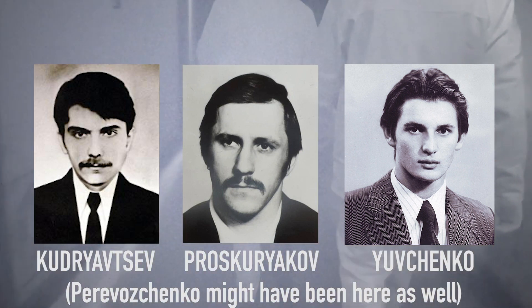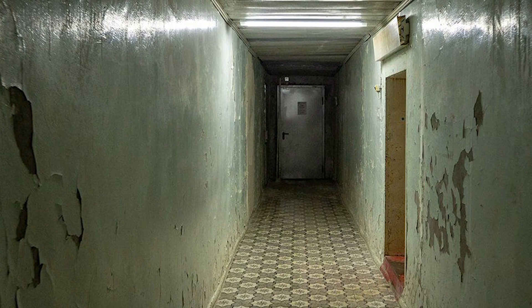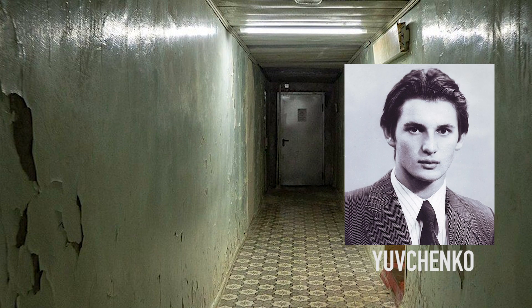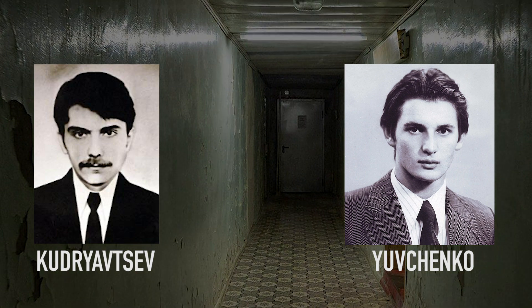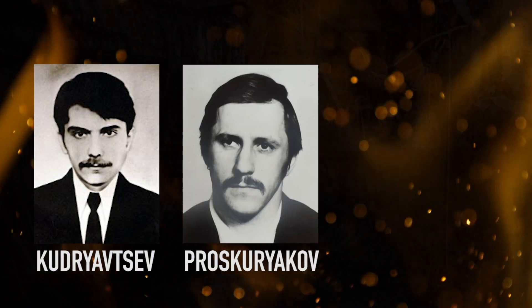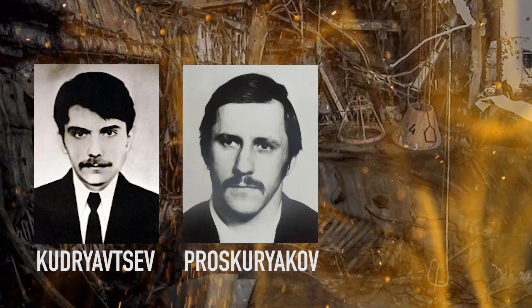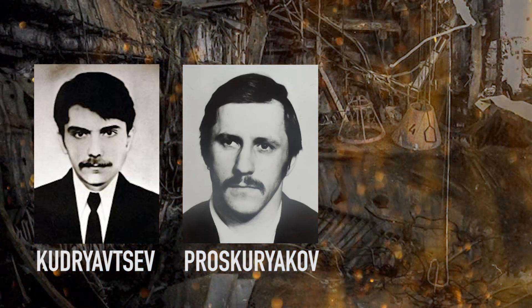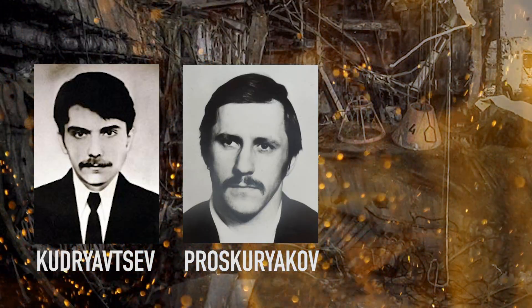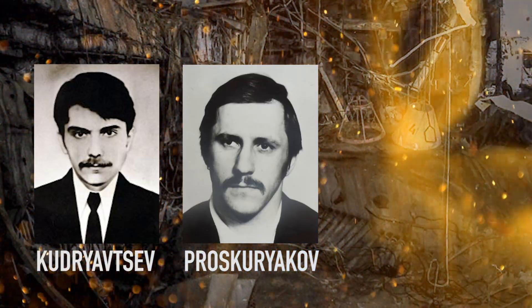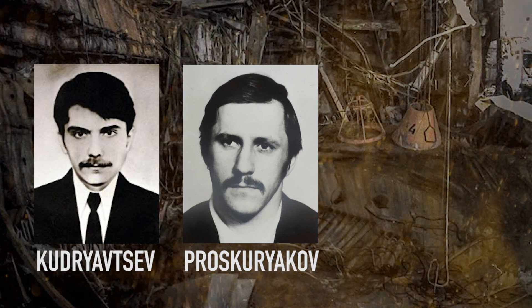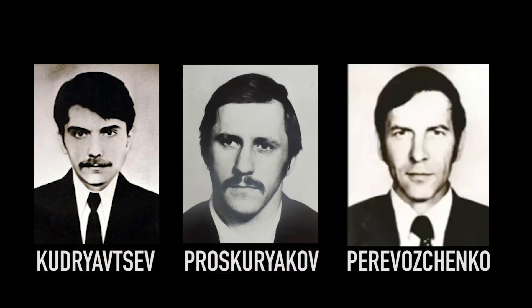The entrance to the reactor room is blocked by a heavy steel door. Yuvchenko forces it open and holds it ajar while Kudryavtsev and Proskuryakov enter to check on the control rods. Confronted with the open flames of the exposed reactor, the skin on their faces quickly darkens, resembling a sunburn. Kudryavtsev and Proskuryakov are only inside the reactor room for a minute, but within that time, both receive a fatal dose of radiation. Along with Perevozchenko, these three men will be the first to succumb to the effects of Chernobyl radiation at the Moscow hospital soon after.